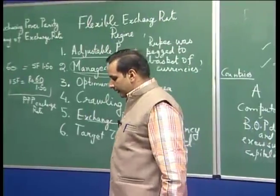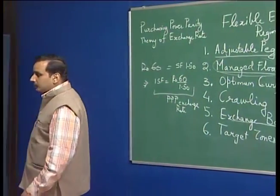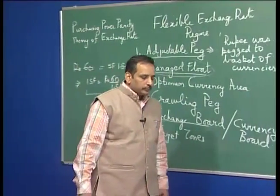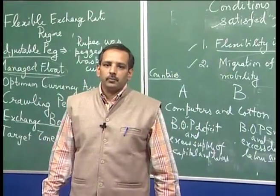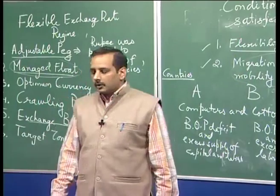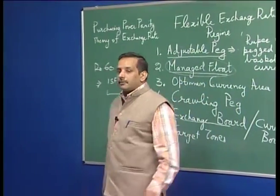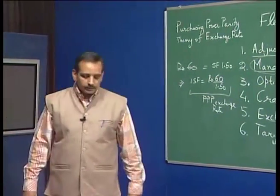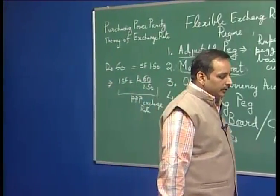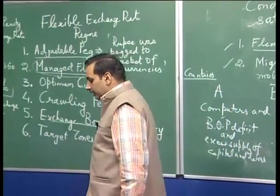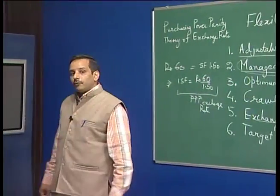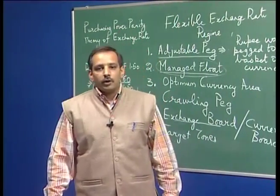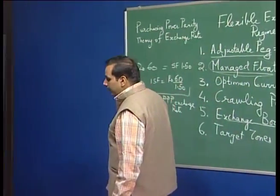Now I want to discuss more about the European Union. The European Union is the highest form of economic integration. There are different forms of economic integration: one is the free trade area, the second is the customs union, the third is the common market, and the fourth is the economic union. Economic union is the highest form of integration, and what Europeans have achieved is the economic union.